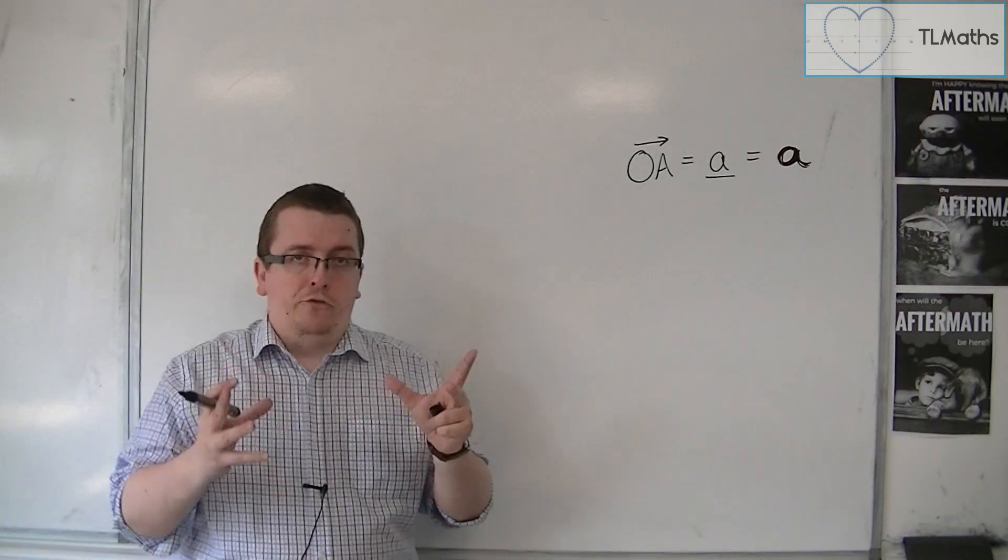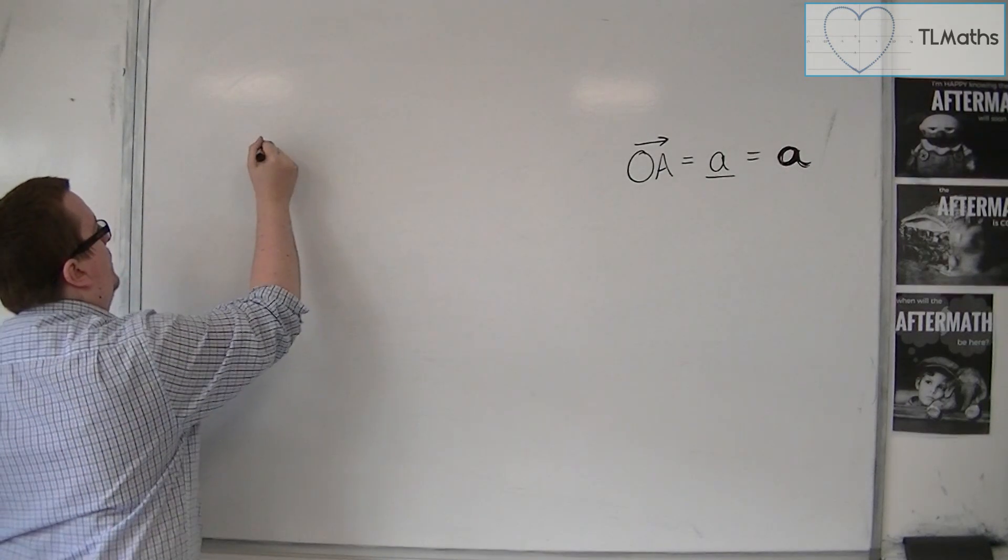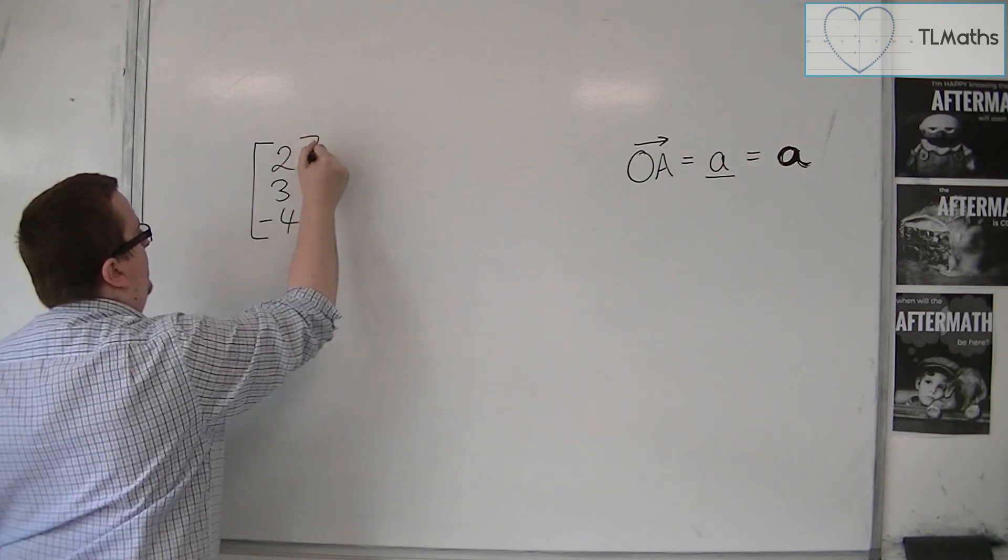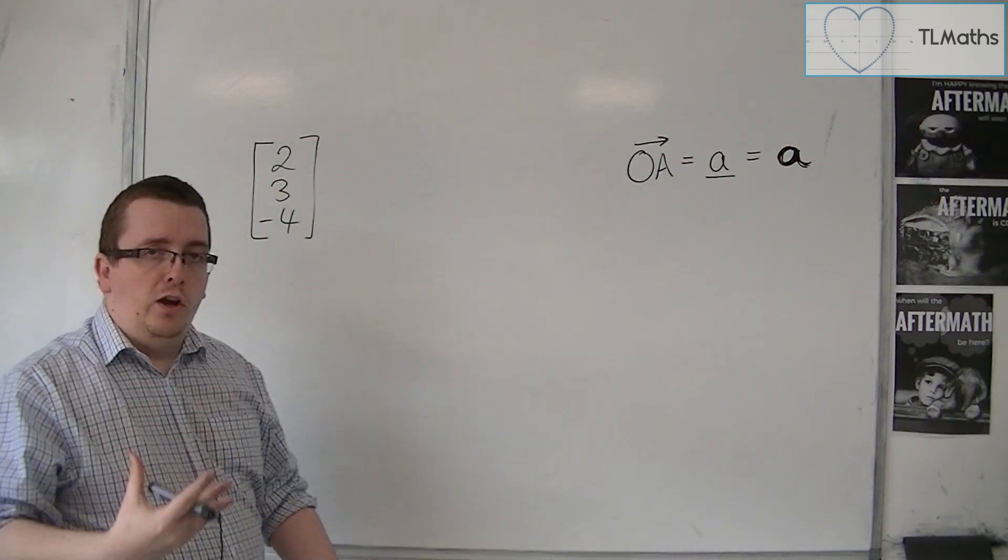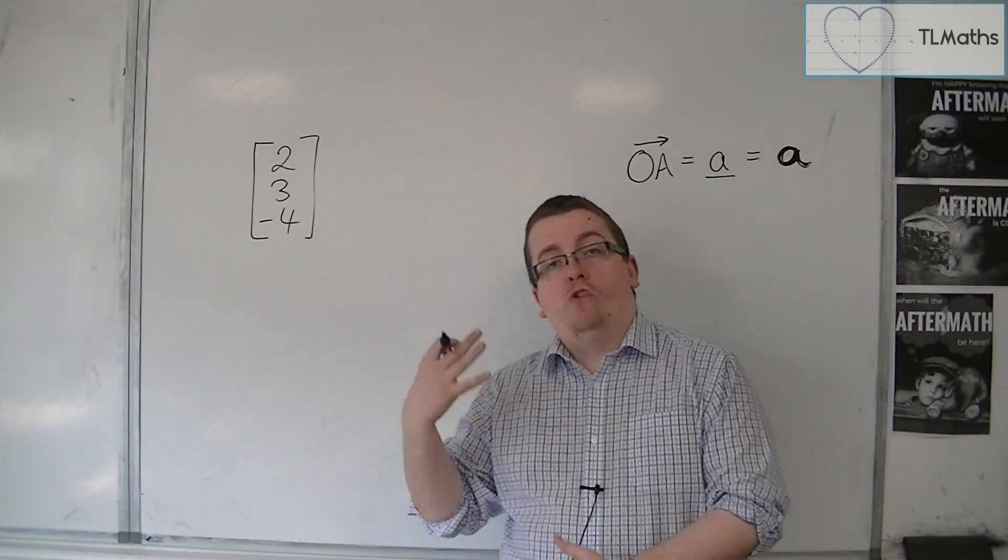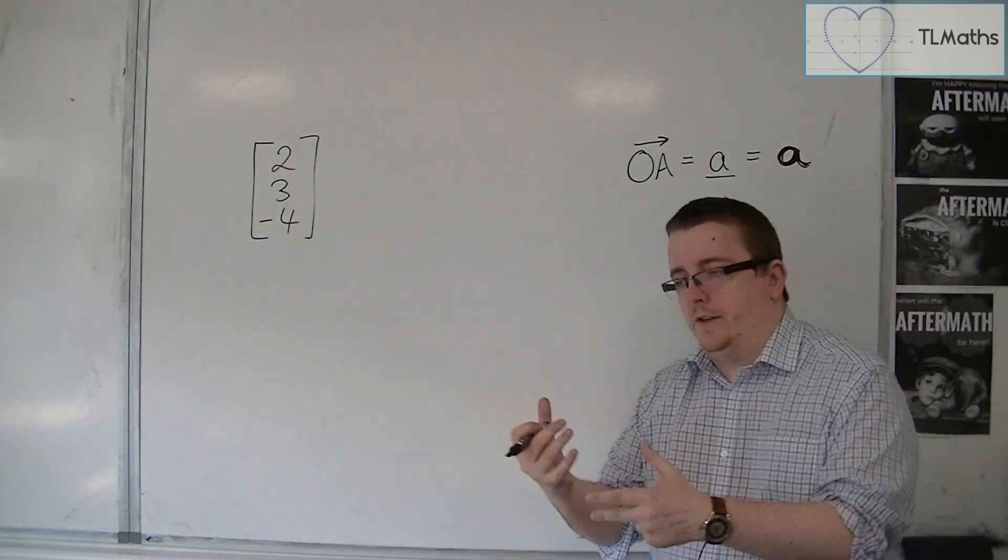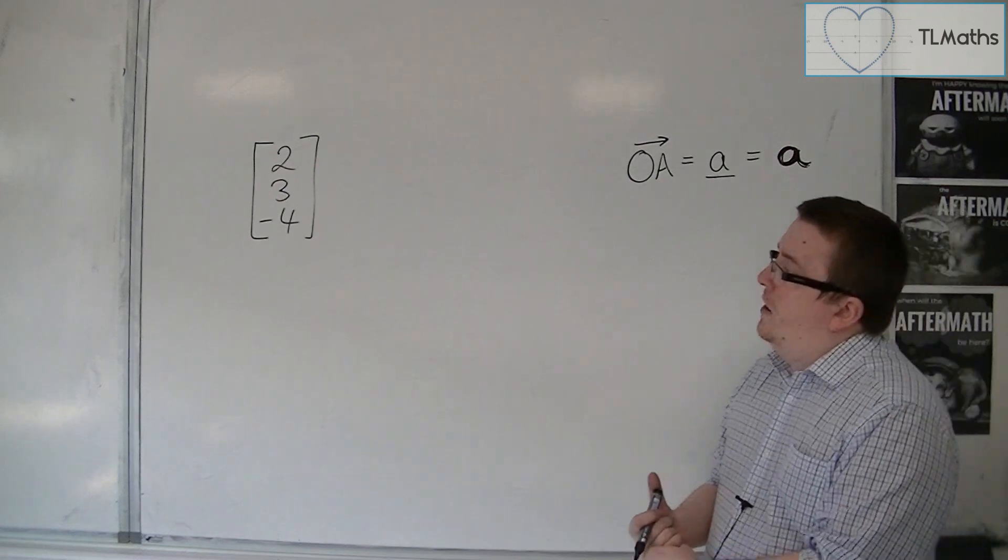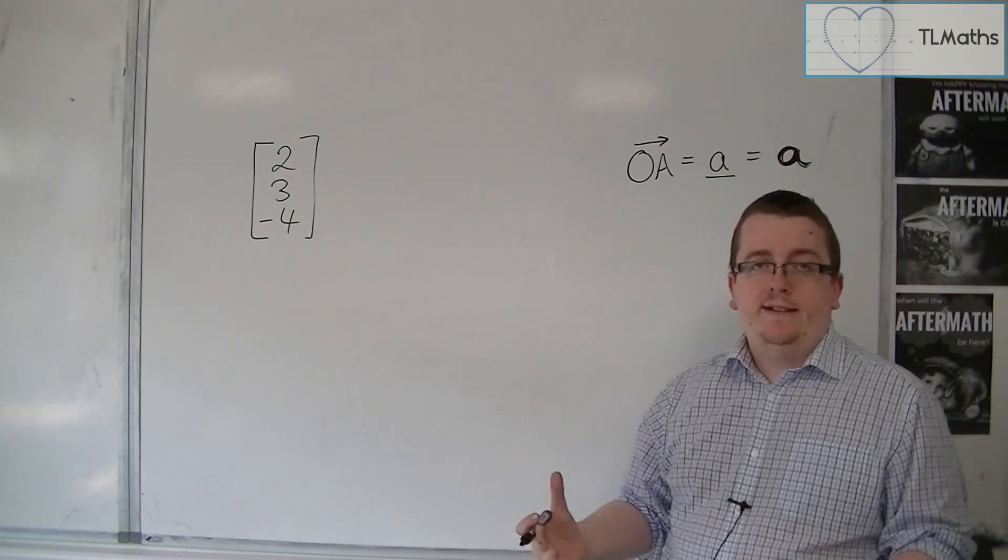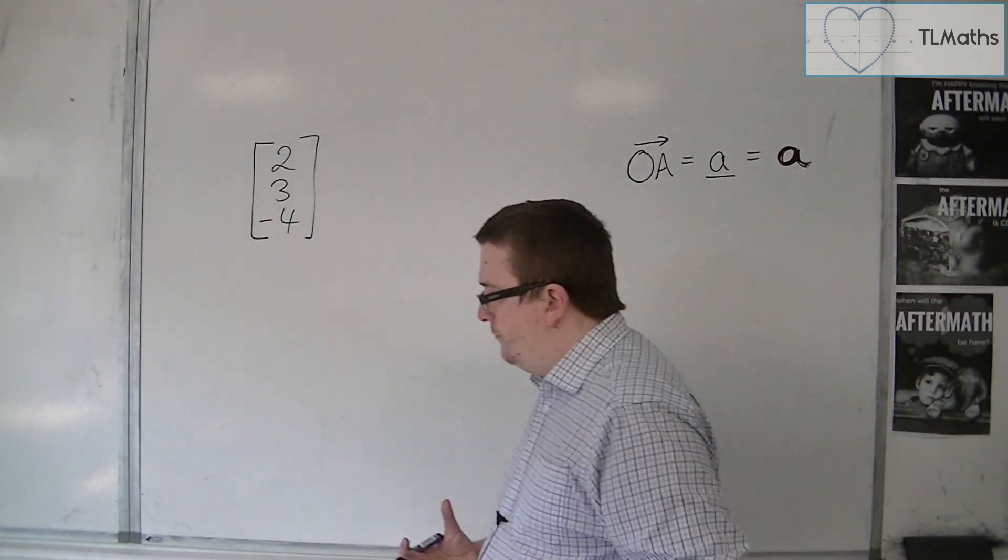There are some different variations. But what I really want to highlight in this video is that because we can write vectors in this column format, some people might use curved brackets rather than square brackets. Personally, I prefer the square brackets. It's all down to preference. So rather than writing it in column format like that, you can also write it in a component form.